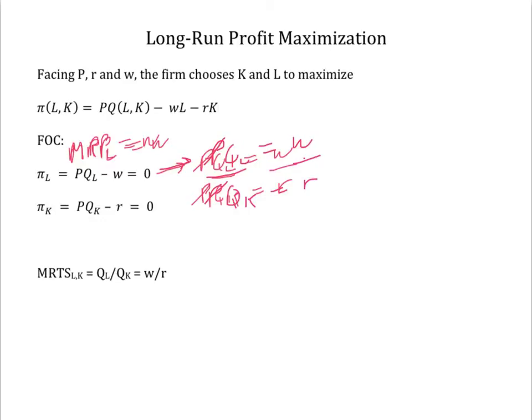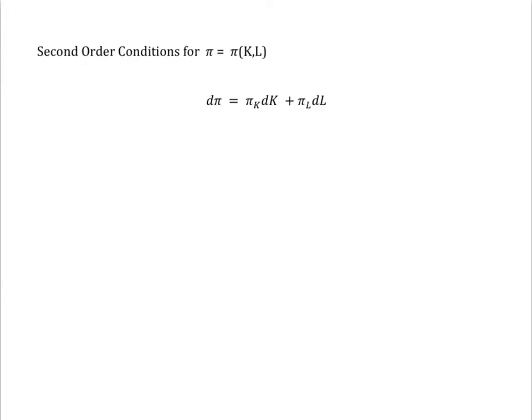For the solution to be a maximum, we must be at the top of the profit hill. That is, the slope of the hill must fall in any direction we move. The effects of K and L on profits are described by the total differential.